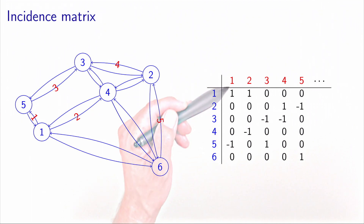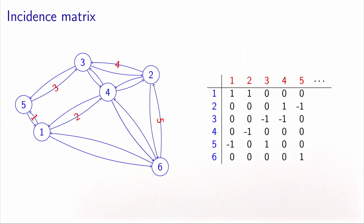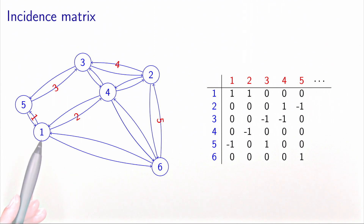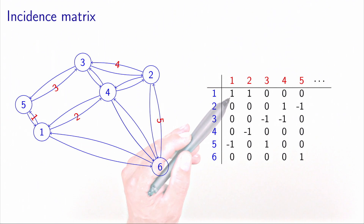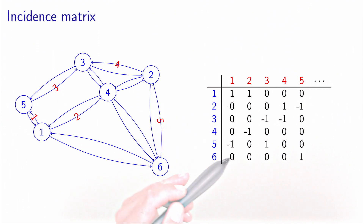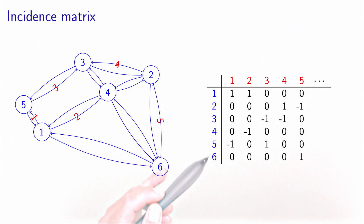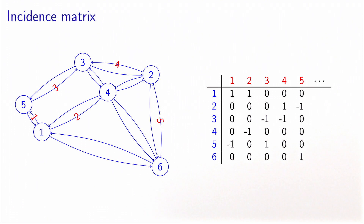For example, arc one is linking node one to node five, so we have a one at row one and a minus one at row five. You can verify that the other arcs are coded in the same way. So this is the incidence matrix.